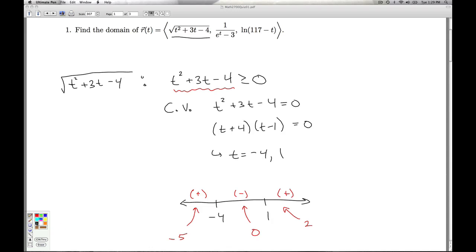So now we return to the problem at hand. I want to know where this expression is greater than or equal to 0. It's equal to 0 at the critical values. It's greater than 0 where I have positives. So for my final answer, it's everything from negative infinity up to and including the negative 4, union 1 to infinity. So those are the values of t that are going to make the first component happy.